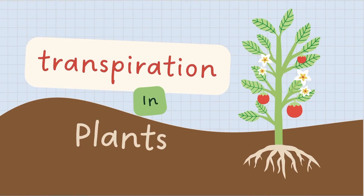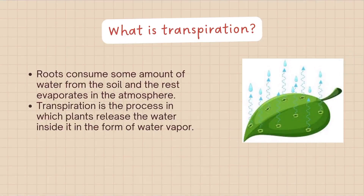Transpiration in plants. What is transpiration? Roots consume some amount of water from the soil and the rest evaporates into the atmosphere. Transpiration is the process in which plants release the water inside them in the form of water vapor.